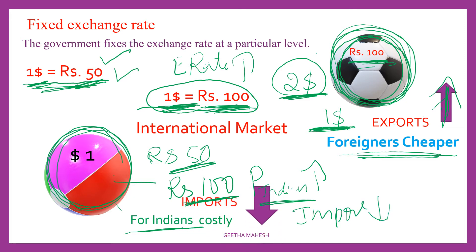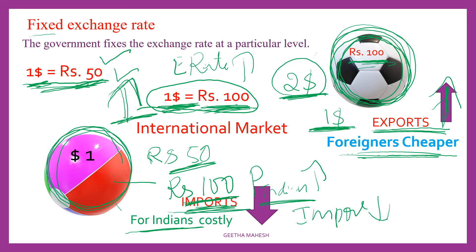What is the government's intention regarding the deficit Balance of Payment? The government should follow a fixed exchange rate method. By doing so, it can very easily promote its exports and discourage imports.